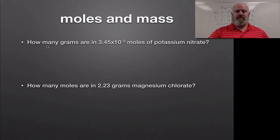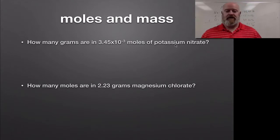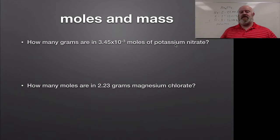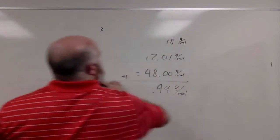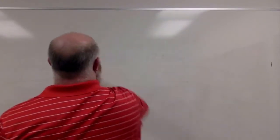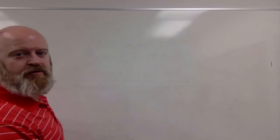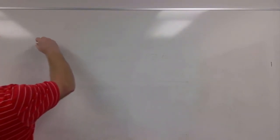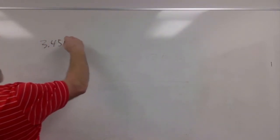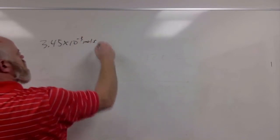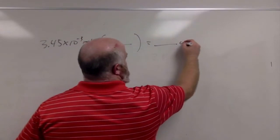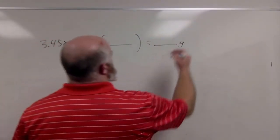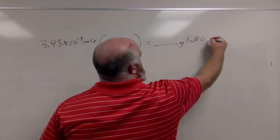Let's look at the first problem. How many grams are in 3.45 times 10 to the negative 3 moles of potassium nitrate? Our first step is to set up a simple conversion. We have 3.45 times 10 to the negative 3 moles, and we want grams. We're dealing with potassium nitrate, which is KNO3.